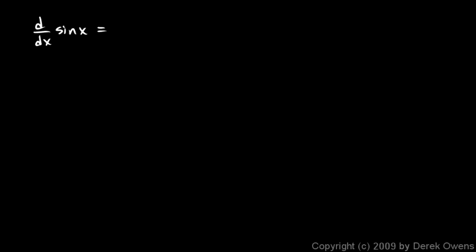So here's a summary of what we have so far: the derivative of sine x is cosine x, and the derivative of cosine x is negative sine x. Take note: we differentiate sine, we get cosine. We differentiate cosine, we get negative sine.